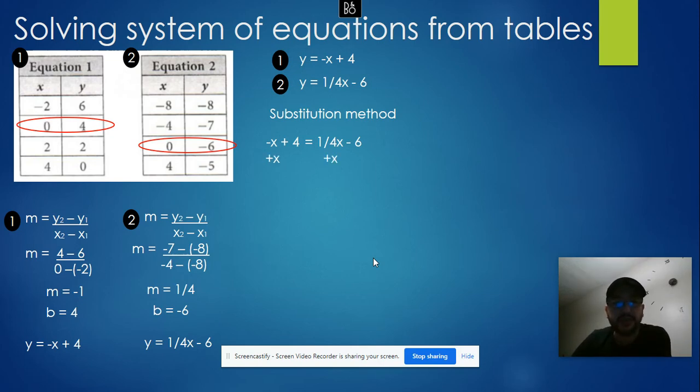Now solve for x. Add x to both sides: 4 equals 5 over 4x minus 6. Add 6 to both sides: 10 equals 5 over 4 times x. To remove the fractional coefficient, multiply by the reciprocal. The reciprocal of 5 over 4 is 4 over 5, so multiply both sides by 4 over 5. Then x equals 8.